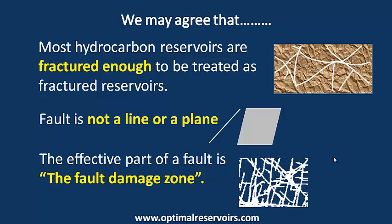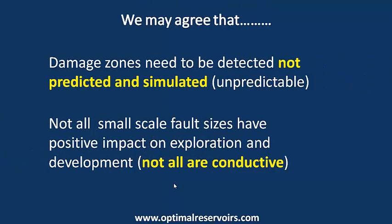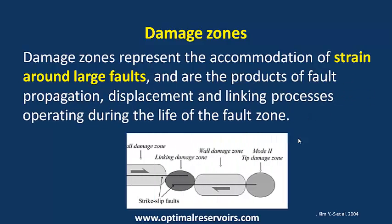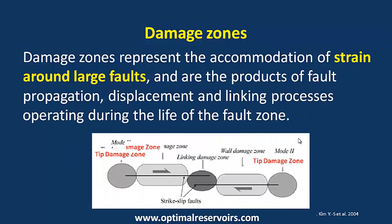A fault is not a line or a plane. The effective part of the fault is the fault damage zone. We may agree that damage zones need to be detected, not predicted and simulated. Not all small-scale fault sizes have a positive impact on exploration and development. Damage zones represent the accommodation of strain around large faults, and are the products of fault propagation, displacement, and linking processes operating during the life of the fault zone.